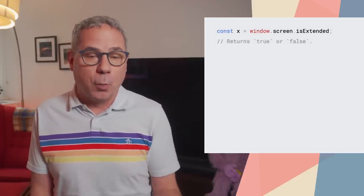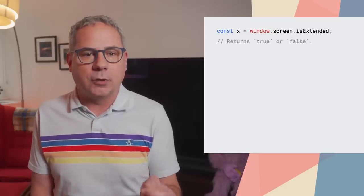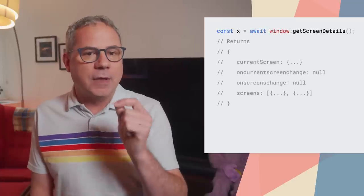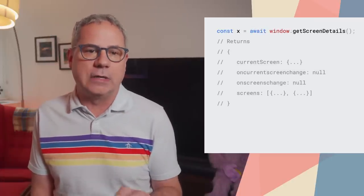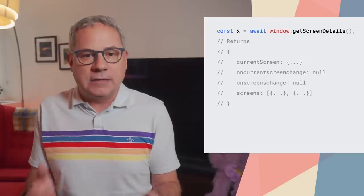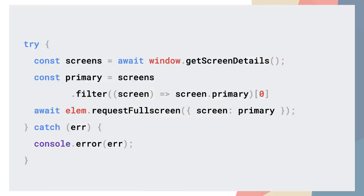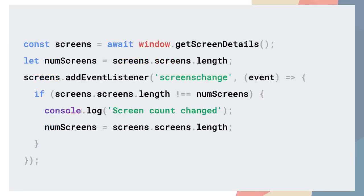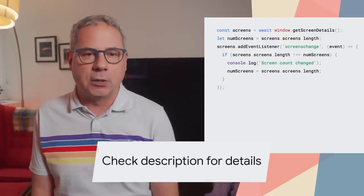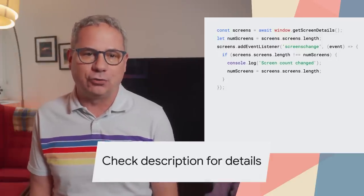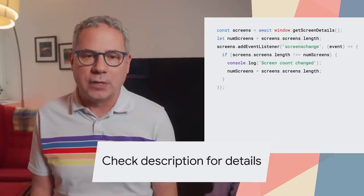You can quickly check if there's more than one screen connected to the device with window.screen.isExtended. The key functionality is in window.getScreenDetails, which provides details about all of the attached displays. For example, you can determine the primary screen, then use requestFullscreen to make an element full screen on that display. It also provides a way to listen for changes — for example, if a new screen is plugged in or removed, or the resolution changes. Check out Tom's updated article on managing several displays with the multi-screen window placement API on web.dev for a deeper dive.